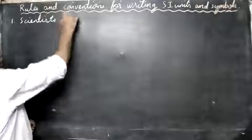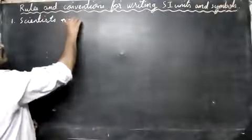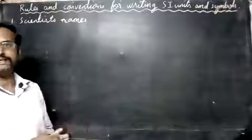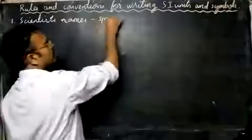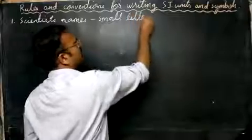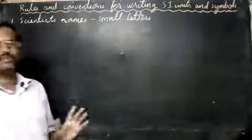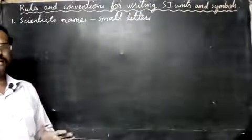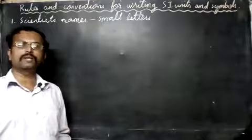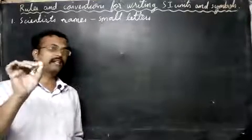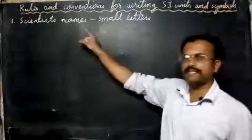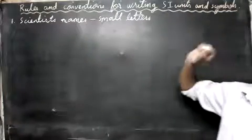The first rule: scientists' names should always be written in small letters. In English, we normally write a person's name starting with a capital letter, but in science, when writing SI units named after scientists, we use small letters only.